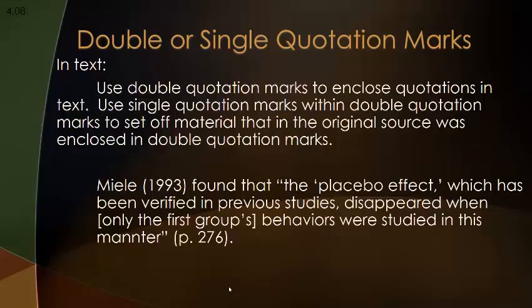Notice where the quotation marks end. The double quotation marks end at the end of the quote. But when you give a direct quote, you have to give a page number according to APA. The page number and the period go outside the end of the quotation mark — and this is a very common error. So you quote the direct quote, your page number goes after it, and then the period ends everything. The author is not going to quote their own page number, so it would not be inside the quote.